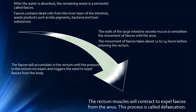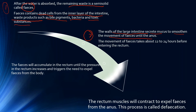The diagram shows the whole process of defecation. After water is absorbed in the large intestine, the remaining waste is in the form of semi-solid feces. Feces contain dead cells from the inner layer of the intestine, as well as waste products such as bile pigments, bacteria, and toxic substances. The wall of the large intestine also secretes mucus to smoothen the movement of feces until they reach the anus. This movement takes about 12 to 24 hours before the feces enter the rectum.